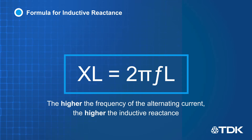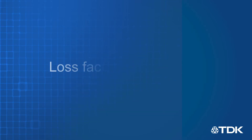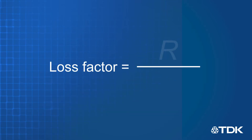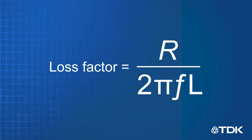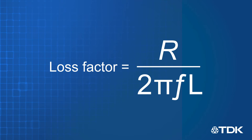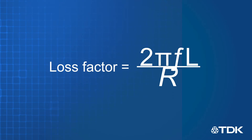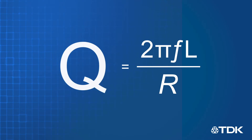The inductor also has a certain resistance value that comes from the wire winding used in the inductor. The ratio between the resistance and the reactive inductance is called the loss factor, and its inverse is the Q value.